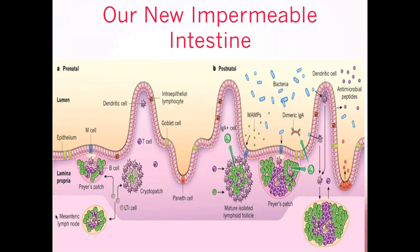Changing the microbiome through prebiotics, probiotics, and diet is probably one of the most powerful tools you have as clinicians for things like chronic inflammation that underlies every chronic issue I've related to in this entire talk. Our microbiota is now our friend that we take care of just like we would a baby — and that's critical.